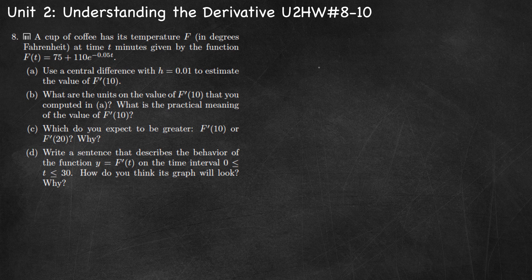For number 8, we're told a cup of coffee has its temperature f measured in degrees Fahrenheit at time t measured in minutes, given by the function f of t, where f of t equals 75 plus 110 e to the negative 0.05t. For part a, we're asked to use a central difference with h equal to 0.01 to estimate the value of f prime of 10. F prime of 10 is the instantaneous rate of change of the function when t is 10, and we're going to use the average rate of change to estimate the instantaneous rate of change.